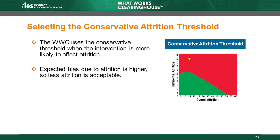Conversely, review teams choose the conservative threshold when the types of interventions studied are more likely to affect attrition. Suppose we're looking at an intervention designed to improve algebra scores. High school students often can choose the classes on their schedule, including whether or not to take an algebra course. So a student could choose to leave a class because of the intervention. In contrast to attrition that isn't directly related to an intervention, this type of attrition has the potential to lead to more bias. The review team leadership for secondary math selected the conservative threshold because they believe more of the attrition in studies of secondary math interventions may be related to the intervention.